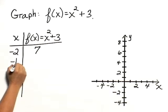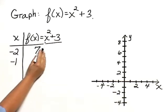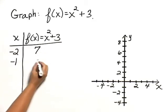Let's choose negative 1 for x. f of negative 1 would be negative 1 squared, which is 1, plus 3, which is 4.